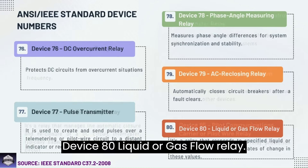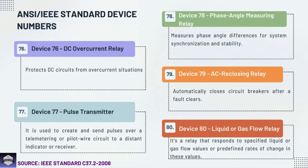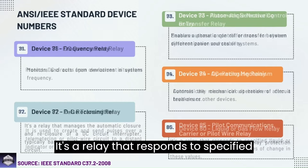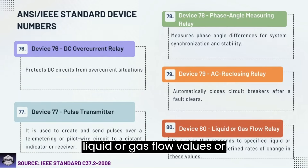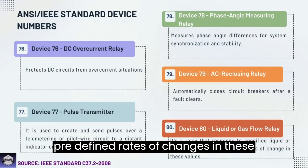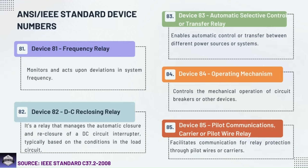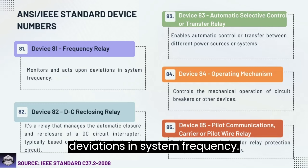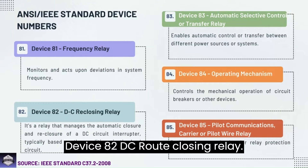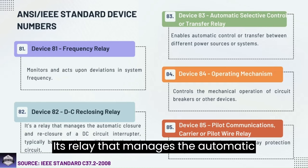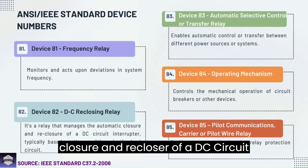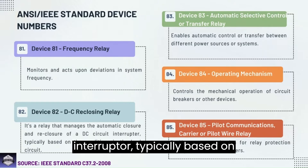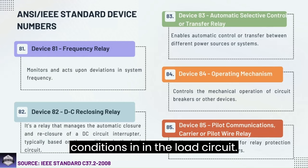Device 80: Liquid or gas flow relay — a relay that responds to specified liquid or gas flow values or predefined rates of change in these values. Device 81: Frequency relay — monitors and acts upon deviations in system frequency. Device 82: DC reclosing relay — manages the automatic closing and reclosing of a DC circuit inductor, typically based on conditions in the load circuit.